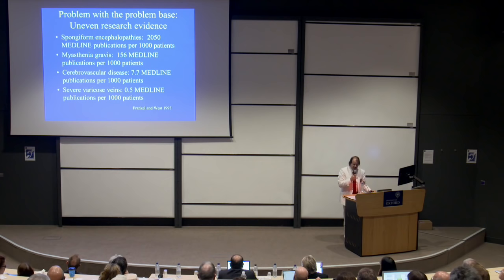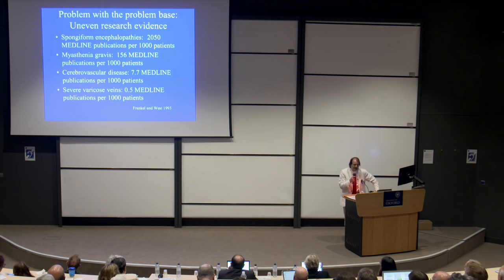Thirty years ago, Frankel and West published data that probably haven't changed much since then. We had a problem with the problem base from the very beginning. What they described was that a patient dying from spongiform encephalopathy was taking two papers with him to the grave. Conversely, things like varicose veins — even though very common and important, lots of people suffer from them — there's not much molecular biology to think about, and therefore there was no investment in trying to address that problem. This problem has continued.